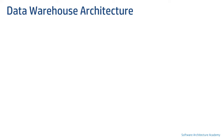Before we begin talking about how a generic data warehouse architecture looks, having a basic understanding of various types of data stores — like OLAP, OLTP, data mart, etc. — would allow you to follow this video easily. Hence I recommend you check out my other quick and short video on types of data stores in this very series.